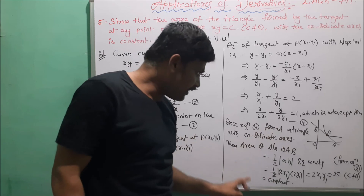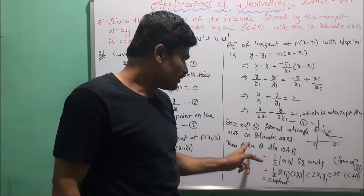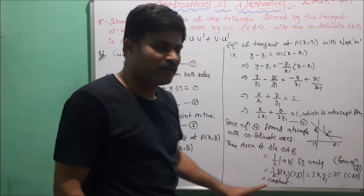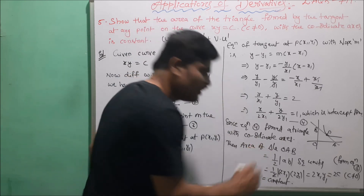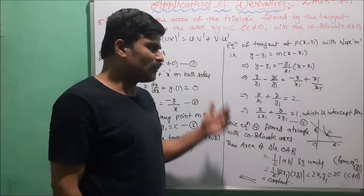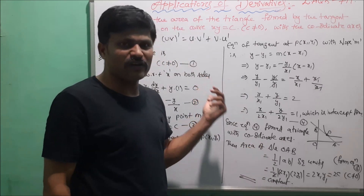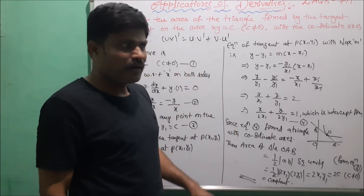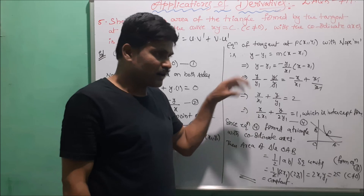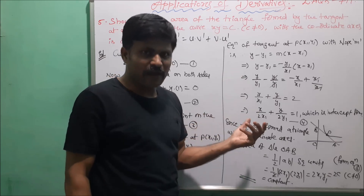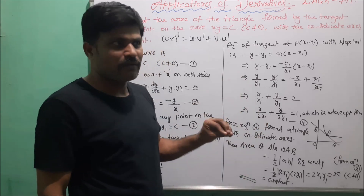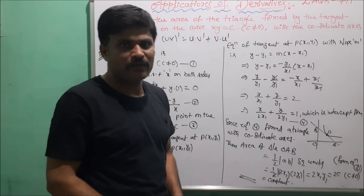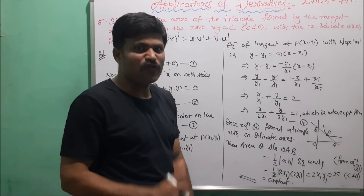So here, clearly we have proved that the area of the triangle is constant. This is the complete solution for this question. Write down this complete solution and prepare well. In the next video, the remaining sums on angle between the curves will be discussed. Thank you. Wish you all the best.